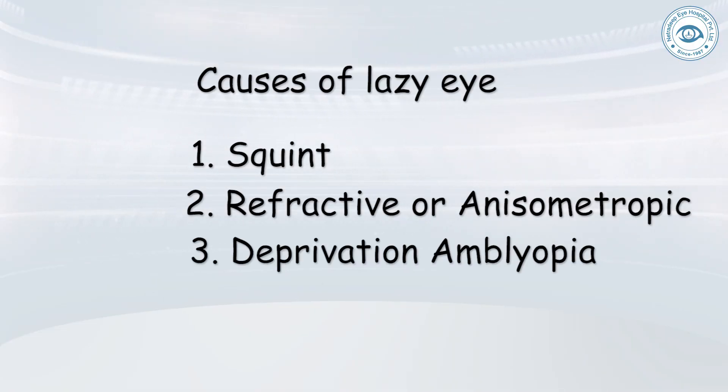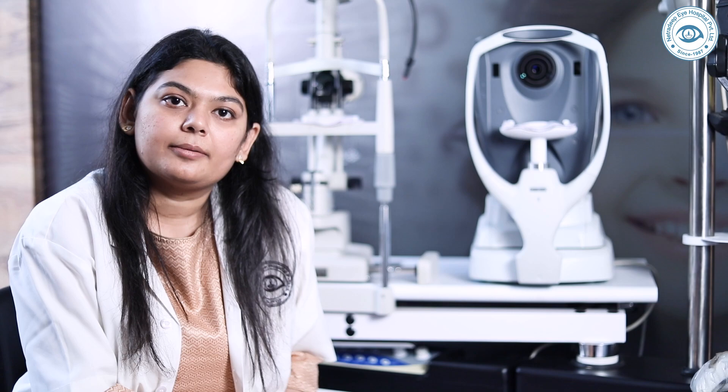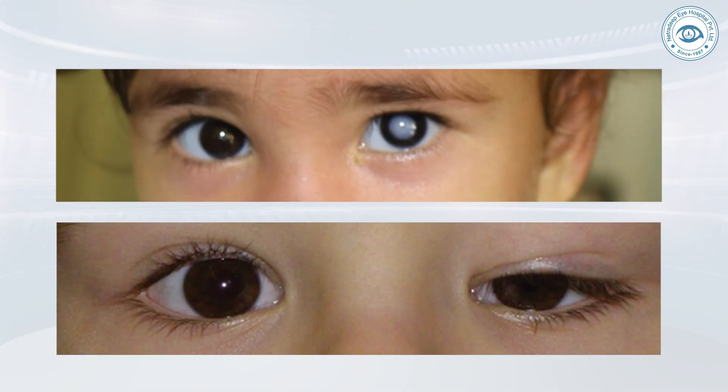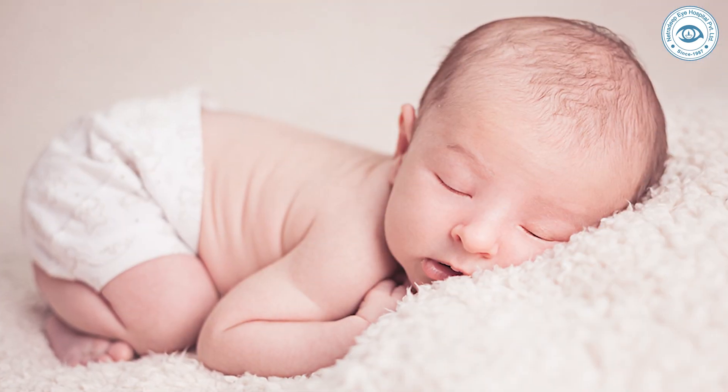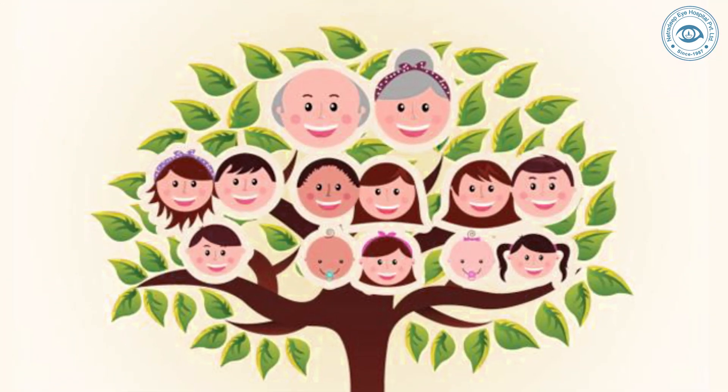The third is deprivation amblyopia, where anything that causes obstruction for light to pass to the retina causes this type of amblyopia — for example, congenital cataract, congenital ptosis, corneal dystrophies, etc. This type of amblyopia needs very aggressive and urgent treatment. Other factors which may predispose to the development of lazy eye are premature birth, family history of lazy eyes, and GDD.